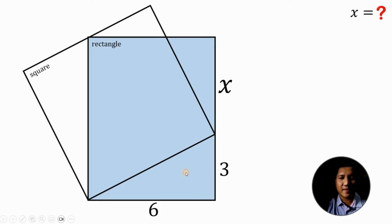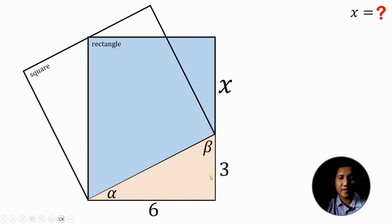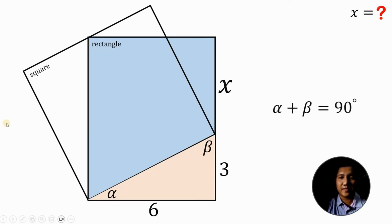Let's consider this right triangle on the bottom part. This angle, let's call this as alpha, and this angle, let's call this as beta. Now since it is a right angle, we can say that alpha plus beta must be equal to 90 degrees. Now take note of this corner — the corner of this rectangle. So this is 90 degrees. So if this is alpha, then the other angle must be equal to beta.